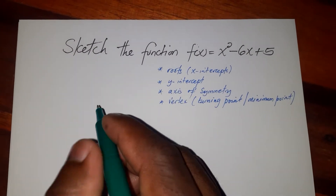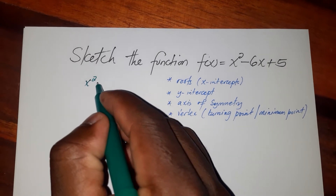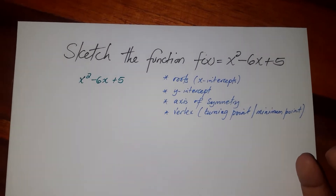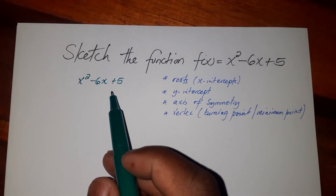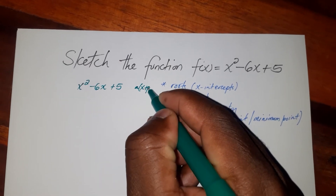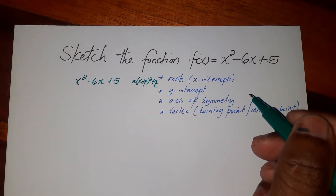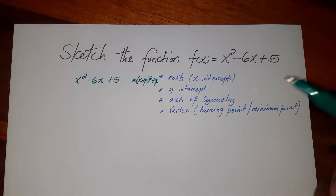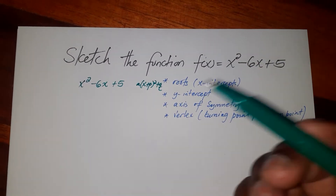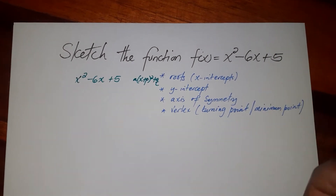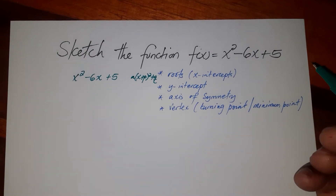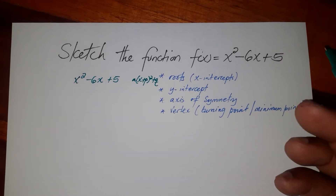What we have to do is rewrite the expression x squared minus 6x plus 5. We need to write it in the form a(x plus p) squared plus q. Writing it in that form makes it easy to get the roots, the y-intercept, the axis of symmetry, and the vertex. To do this we need to perform what is known as completing the square. I have made a video on completing the square — you can check that — but here I will do it a little bit faster.